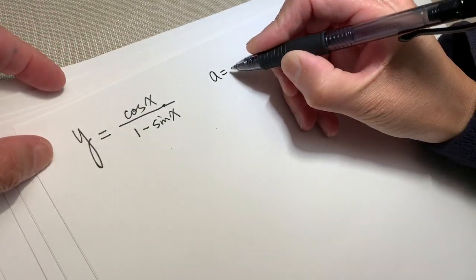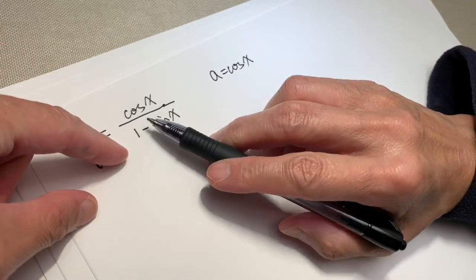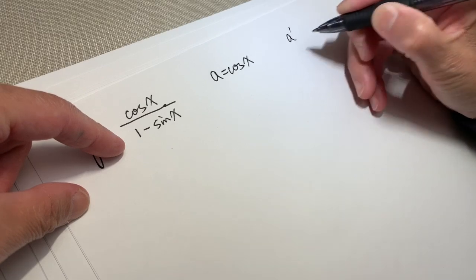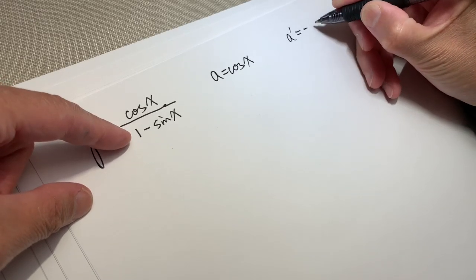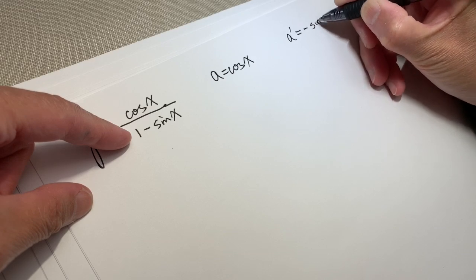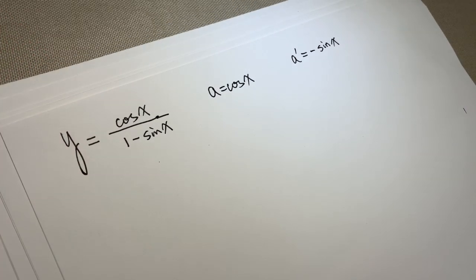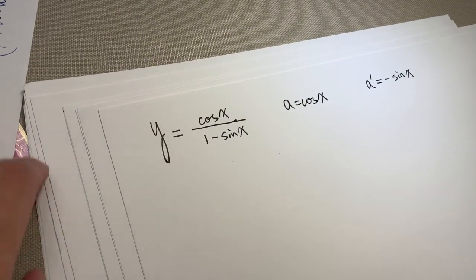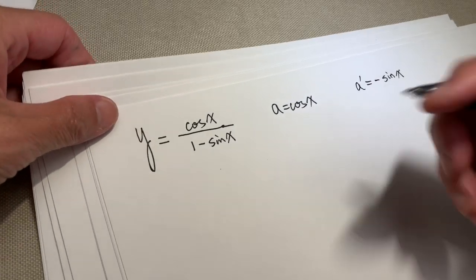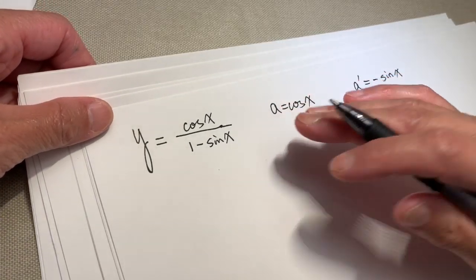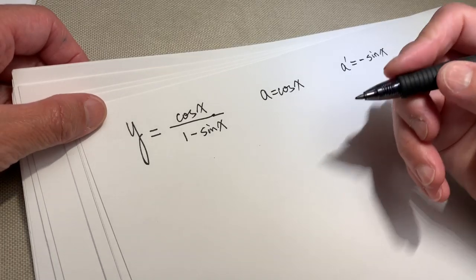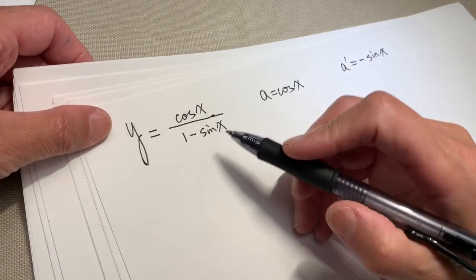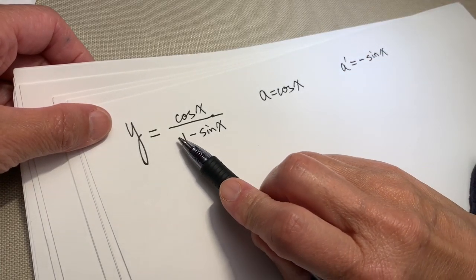A is cosine x. So A prime is negative sine x, right? We know this. If you do not remember this, you can always check online using the keyword 'trigonometry differentiation.'